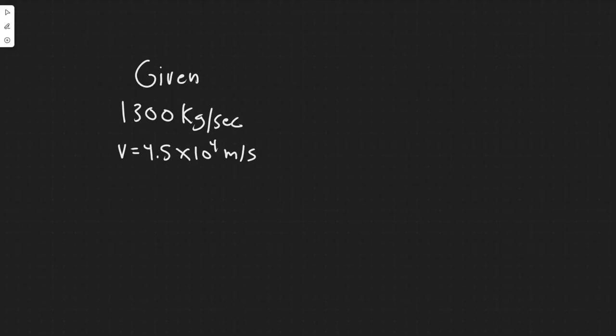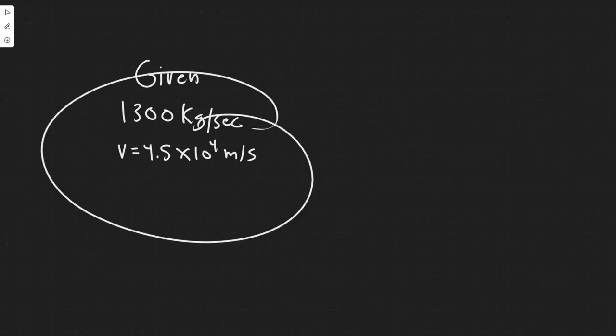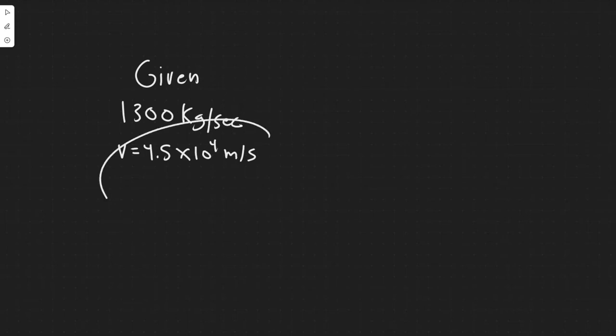In this problem, we're told to calculate the force exerted on a rocket when the propelling gases are being expelled at a rate of 1,300 kilograms per second with a speed of 4.5 times 10 to the 4 meters per second. So we're given two things here: kilograms per second and the velocity.